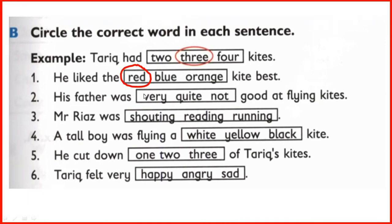Tariq liked the red kite best. His father was not good at flying kites — 'not good' is the answer. Number 3: Mr. Riyaz was shouting, reading, or running? Mr. Riyaz was sitting on a mat and he was reading a book — 'reading' is the answer.